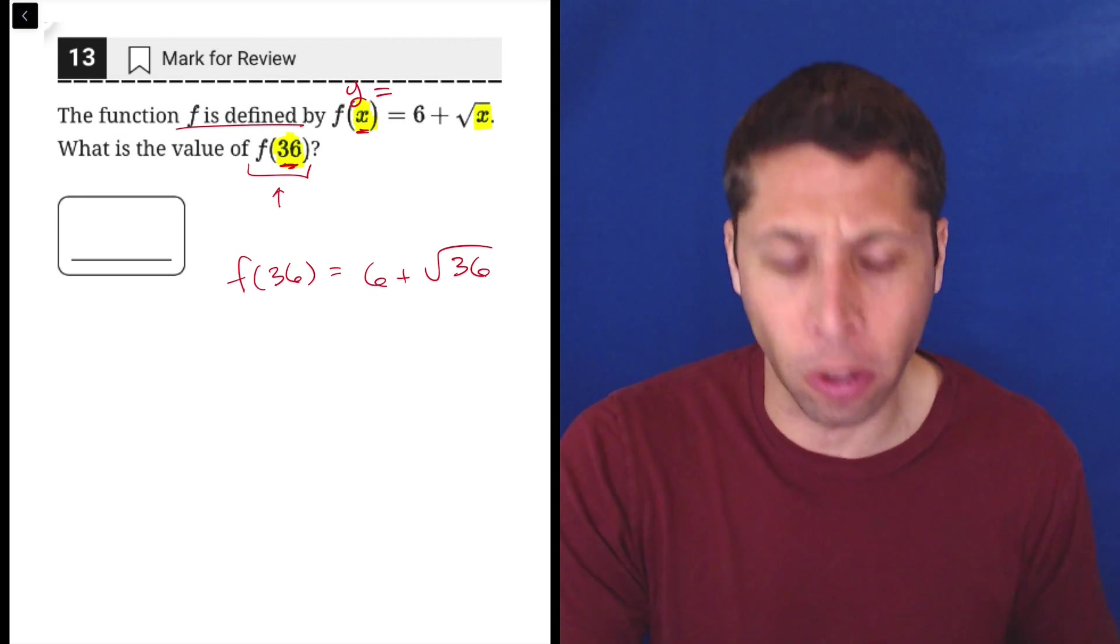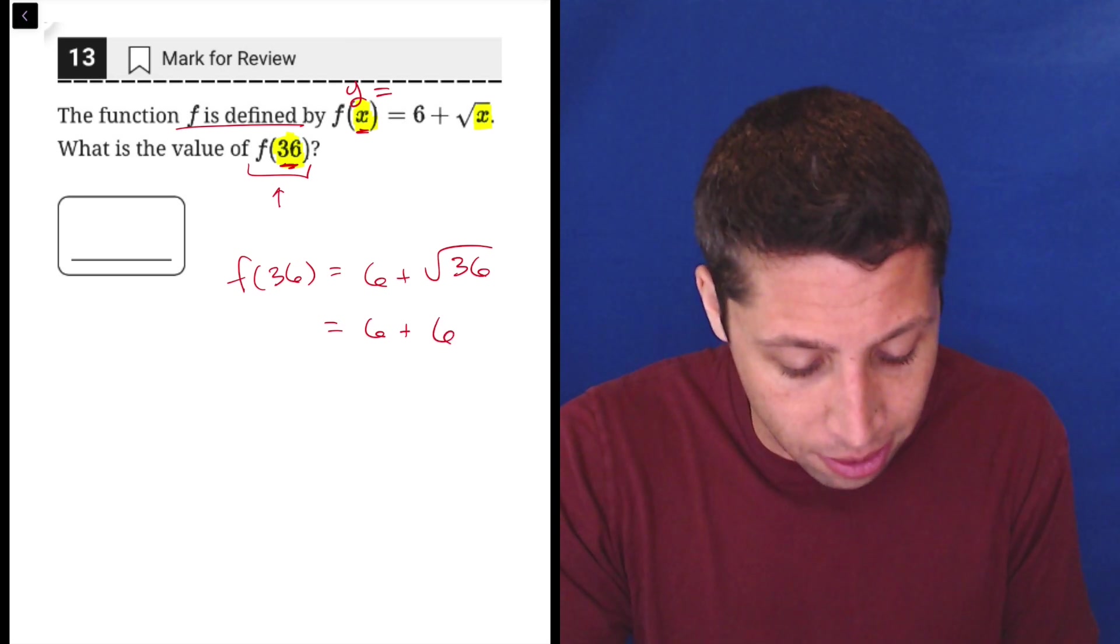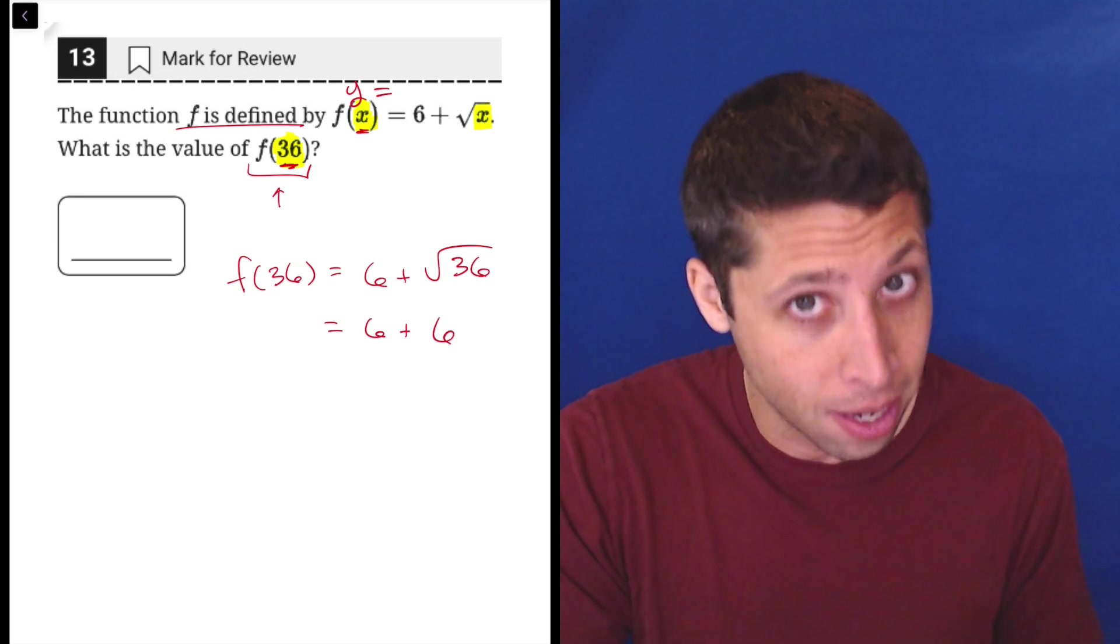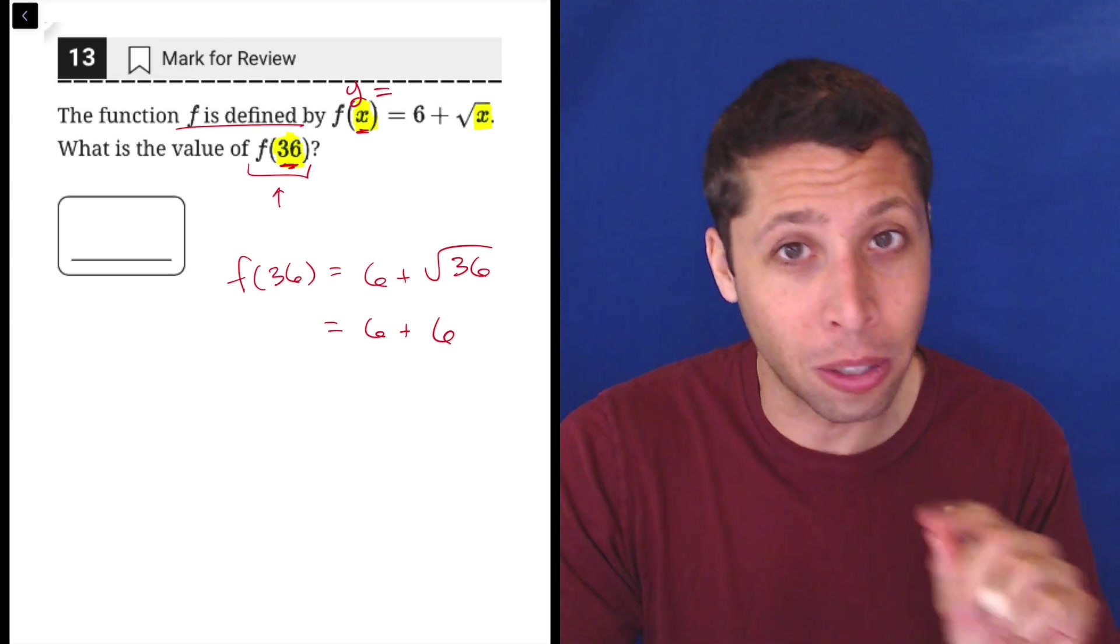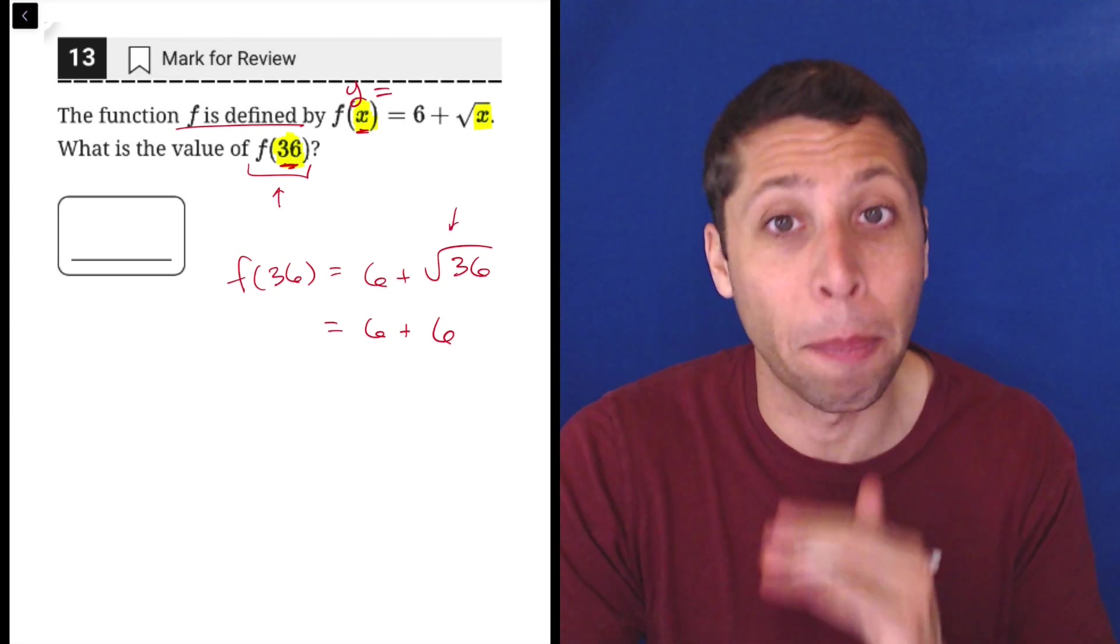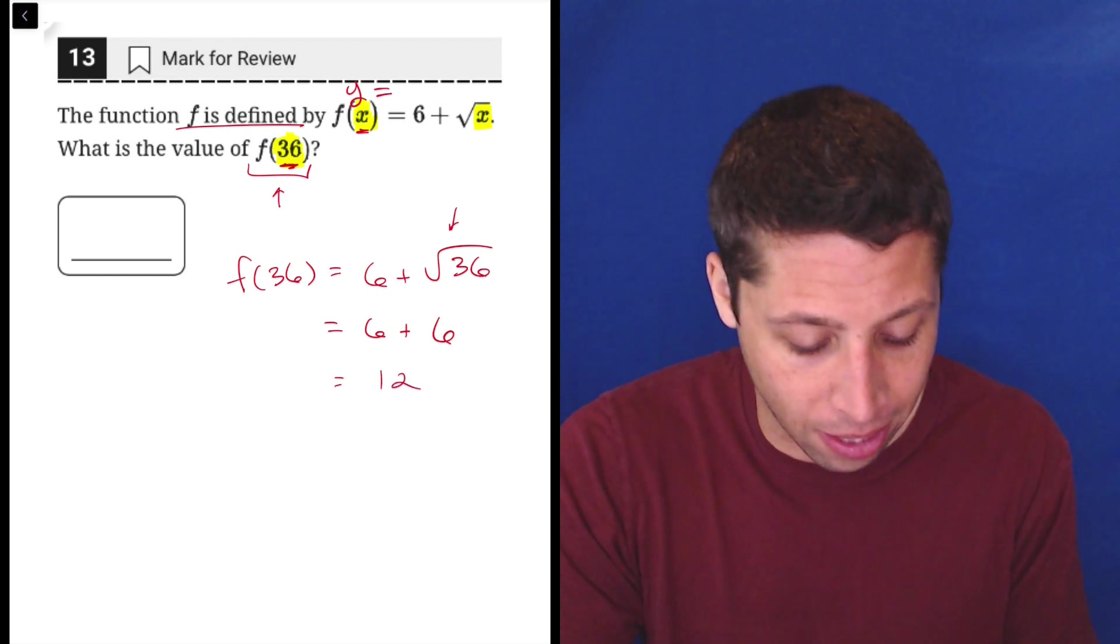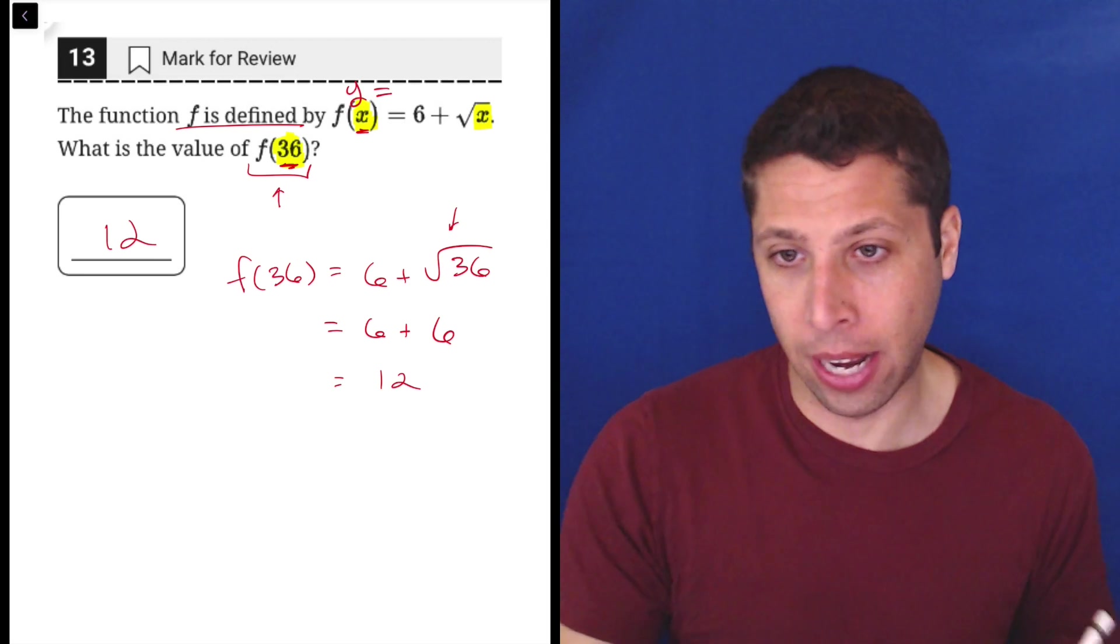Now it's just arithmetic. And you could put this in the calculator if you wanted to, but you should know that the square root of 36 is 6, positive 6. Now I know sometimes your teacher will say it could be negative 6, but no, whenever we use this square root symbol, we always want the positive root. So it's positive 6 and then 6 plus 6 is 12. And that is our answer. So that's it.